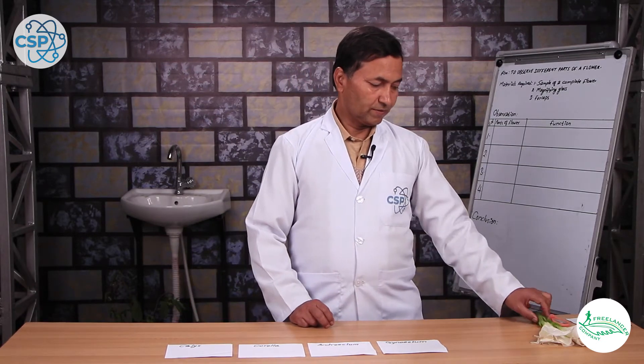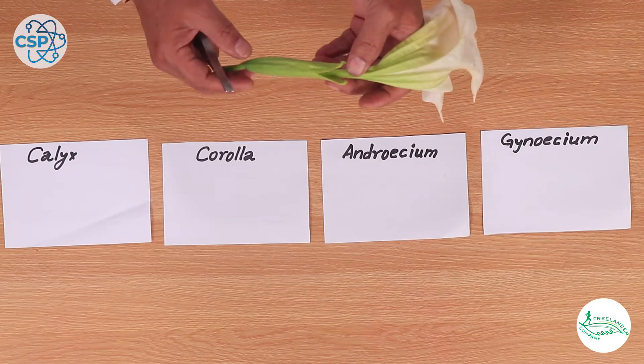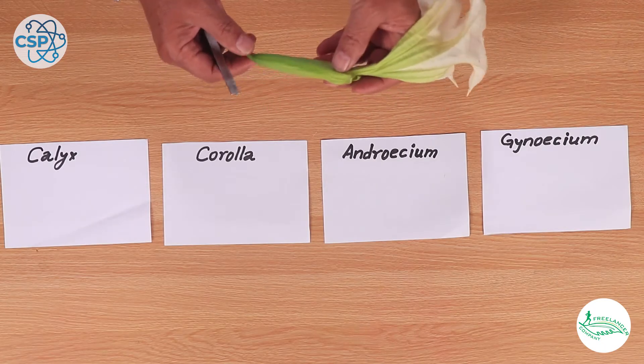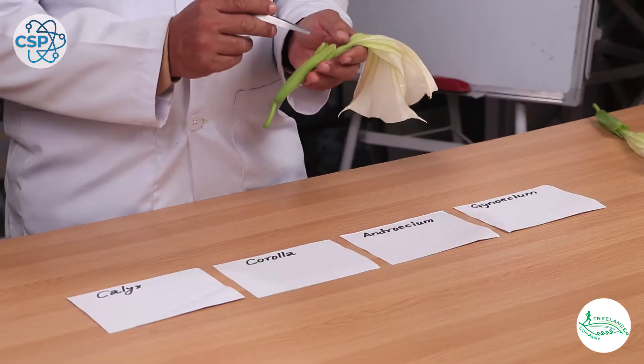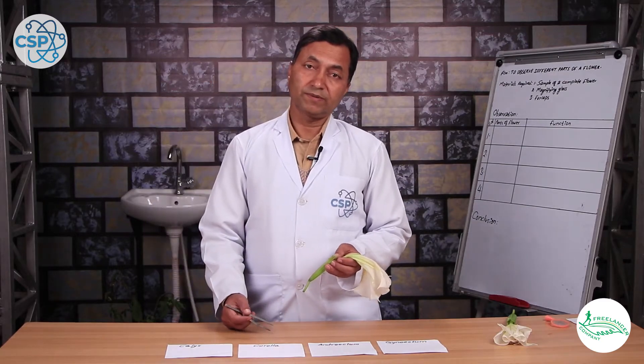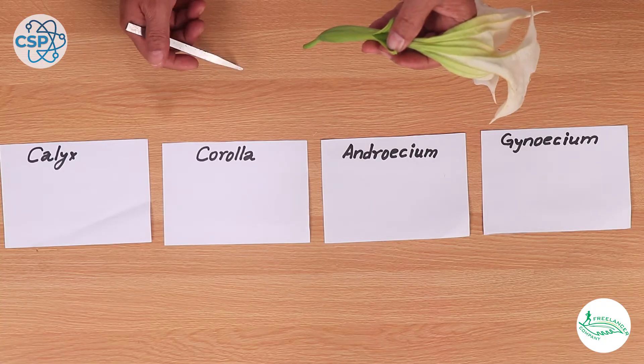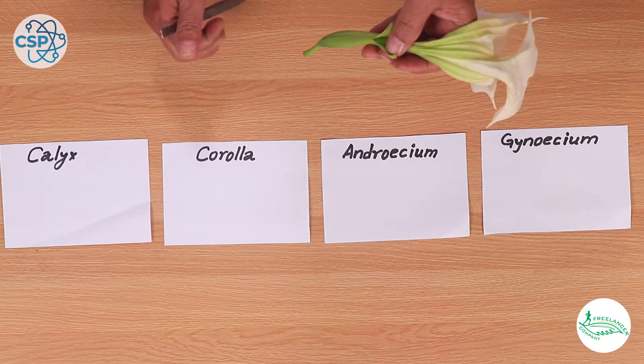This part is called Calyx. Calyx is a group of sepals. This flower is a complete flower.